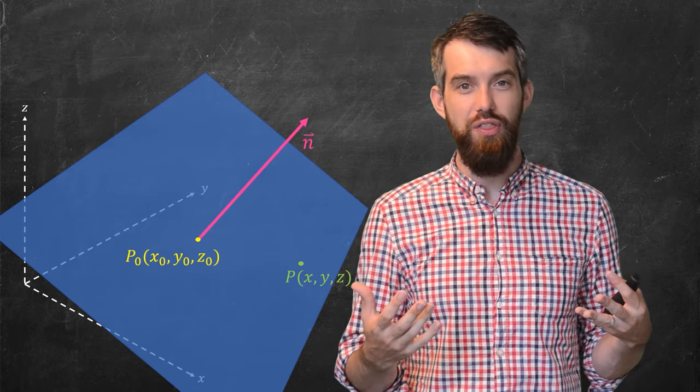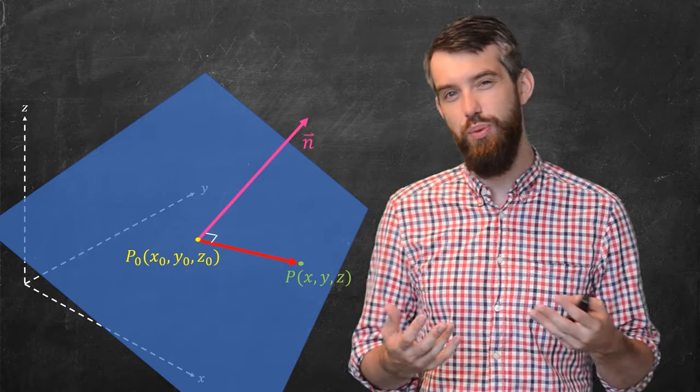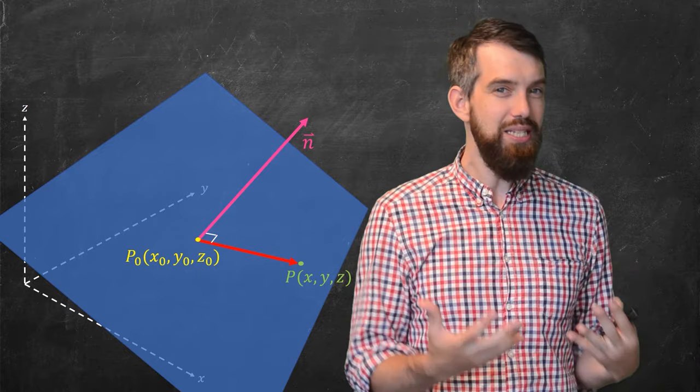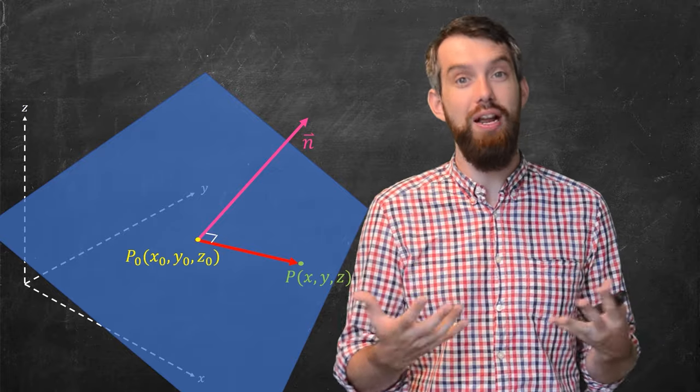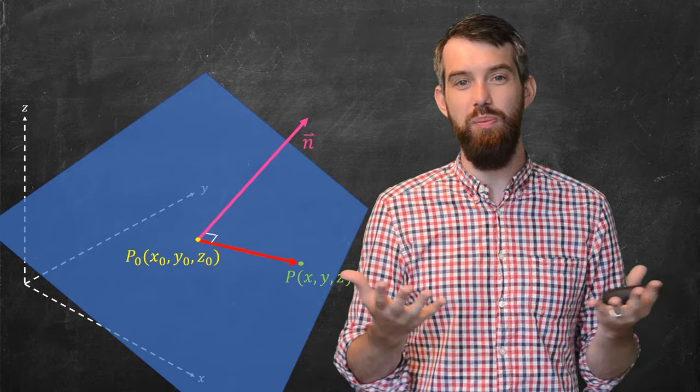Well, there is a vector that goes from the P₀ to the P. It's this red vector I'm putting here. And what I meant precisely when I said that it is a normal vector to the plane is that it is orthogonal with any vector that is lying in the plane.